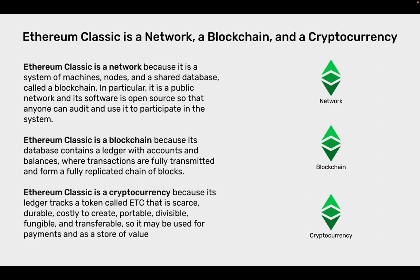Ethereum Classic is a blockchain because its database contains a ledger with accounts and balances where transactions are fully transmitted and form a fully replicated chain of blocks. Ethereum Classic is a cryptocurrency because its ledger tracks a token called ETC that is scarce, durable, costly to create, portable, divisible, fungible, and transferable, so it may be used for payments and as a store of value.